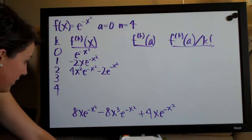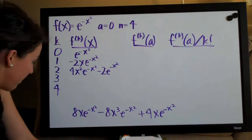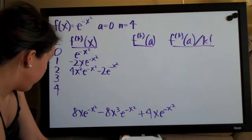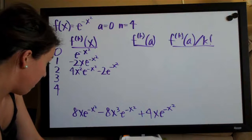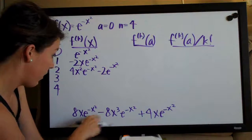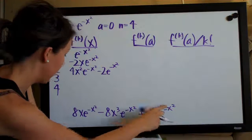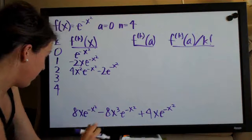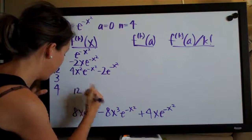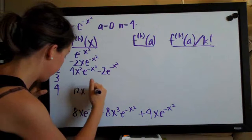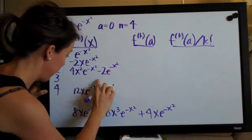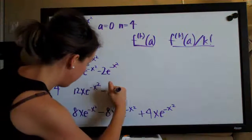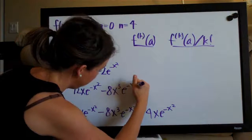Now that it's this complicated, it might be best to factor. So let's go ahead and factor. Actually, this 8x·e^(-x²) and this 4x·e^(-x²) can be combined. Since we've got a plus here, we're actually looking at 12x·e^(-x²) when we add those two together, and then minus 8x³·e^(-x²).